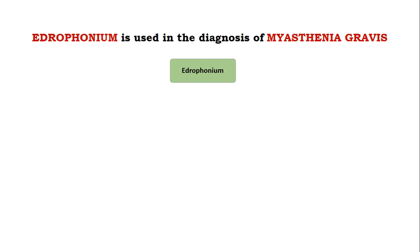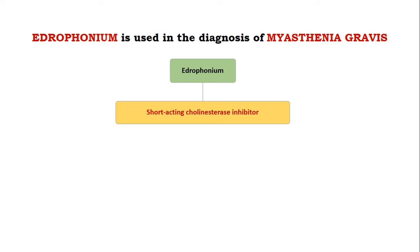Edrophonium is an acetylcholinesterase inhibitor which is given intravenously at 2 milligrams, and it is a short-acting cholinesterase inhibitor. That's why it is used for diagnostic purposes — because of its short-acting property.